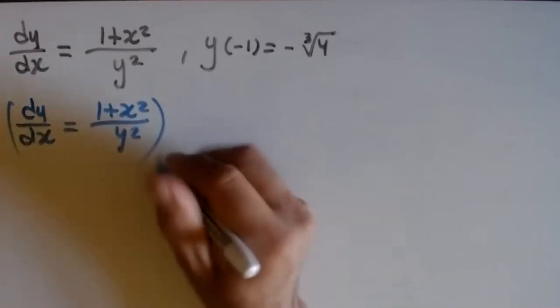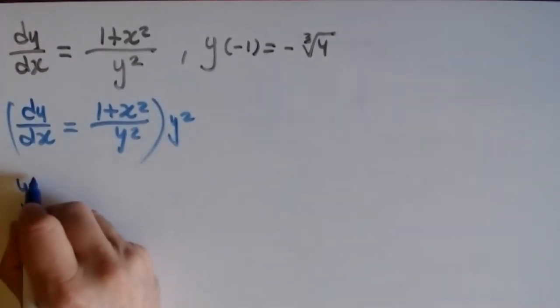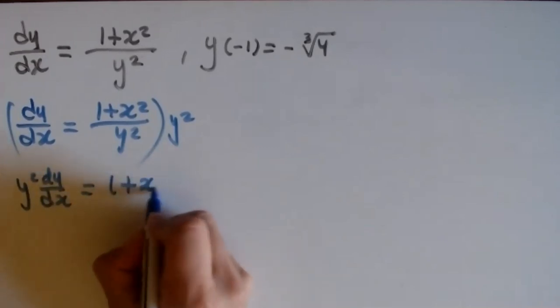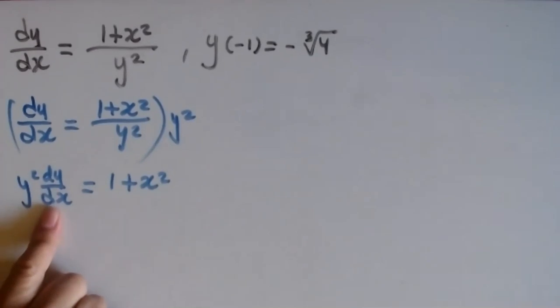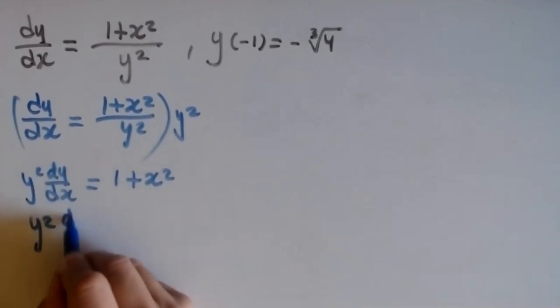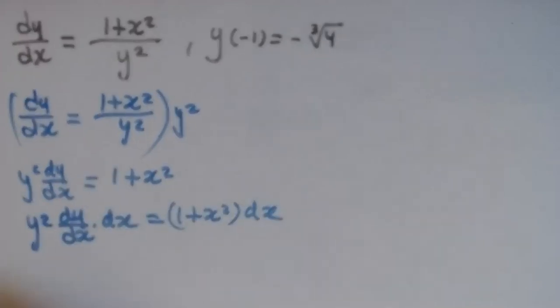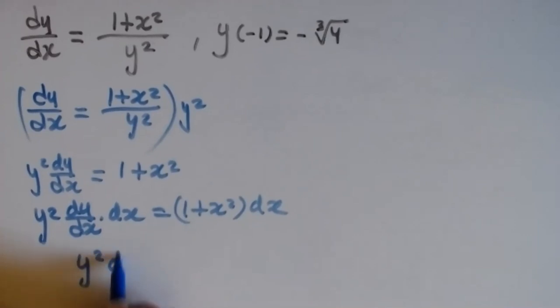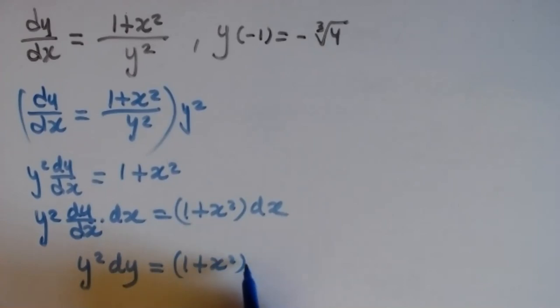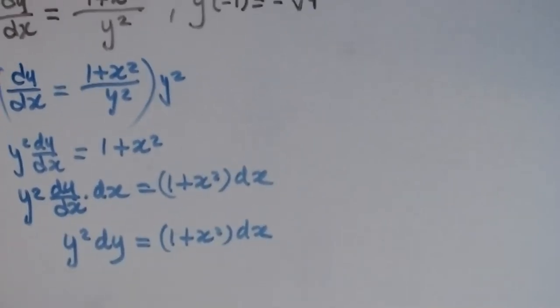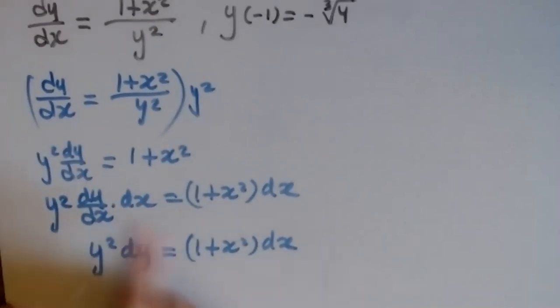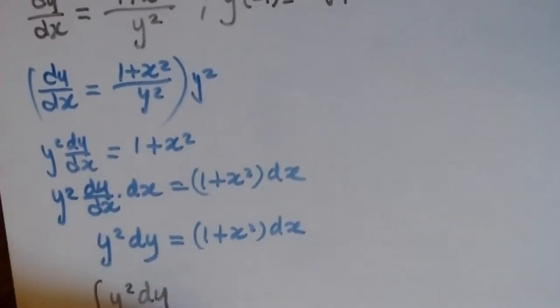The dy/dx · dx becomes dy, so: y² dy = (1 + x²) dx. This is plain algebra — no calculus yet. The integral step is next: integral of y² dy equals integral of (1 + x²) dx. That's my integral.